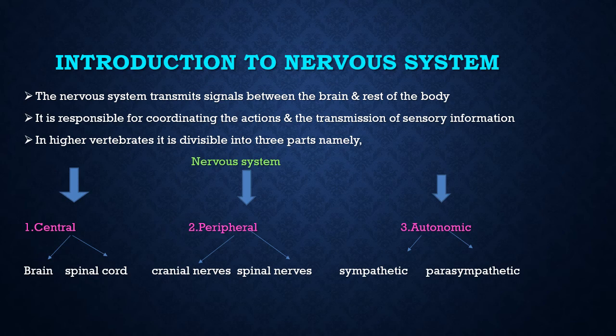The Nervous System is also responsible for coordinating the actions and transmission of sensory information. In case of higher vertebrates, the Nervous System is divisible into three parts: one is Central, second is Peripheral, and third is Autonomic Nervous System.